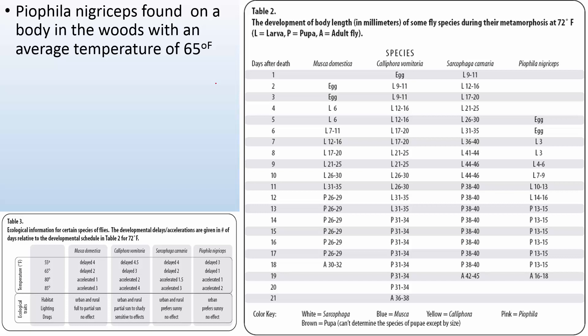All right, what about this? Pilophila nigroseps found on a body in the woods with an average temperature of 65 degrees. All right, so let's take a look. Pilophila nigroseps. Oh I don't even give you a measurement. I wonder why I didn't do that. Well let's take a look at this. Pilophila nigroseps is found in urban settings. And this one says the body was found in the woods. So what does that tell me? It tells me that the body was moved from an urban setting.